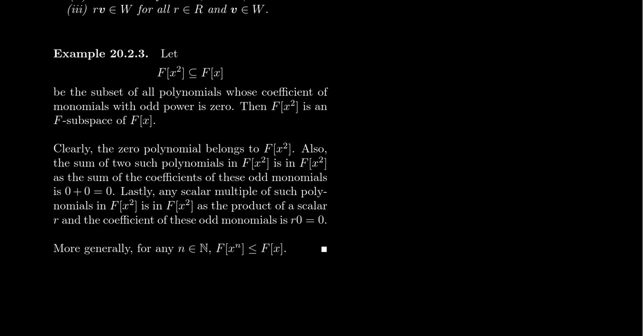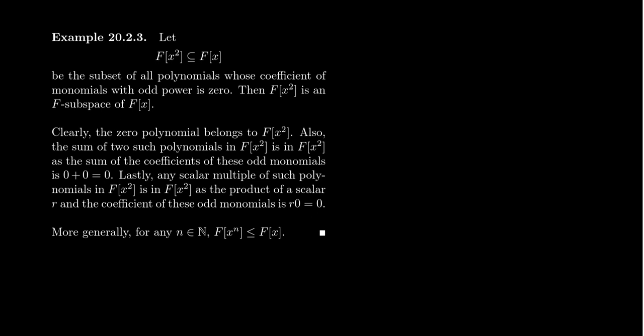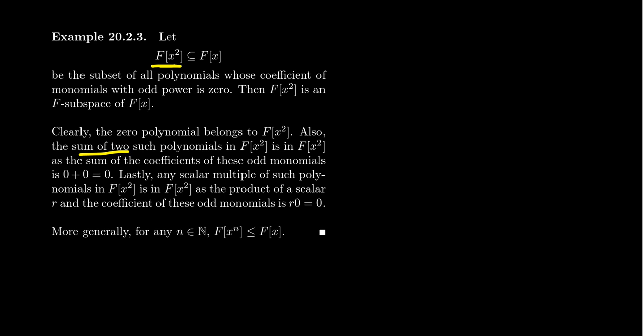I'll leave it as an exercise to prove these three conditions are equivalent to being a submodule; it's the same proof used in linear algebra to show when a subset is a subspace. As an example, consider the polynomial ring F[x], where F is a field, making F[x] a vector space. Consider the subset F[x²], consisting of polynomials with only even powers of x — that is, the coefficient of any odd-degree monomial is zero. F[x²] contains the zero polynomial because its coefficients are all zero.